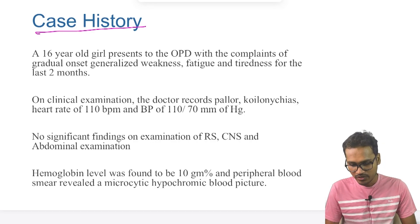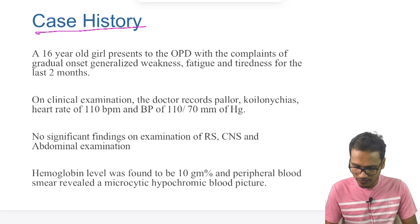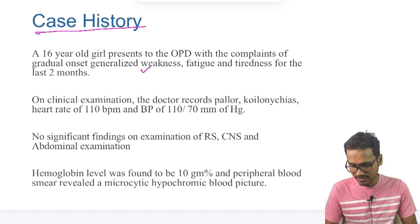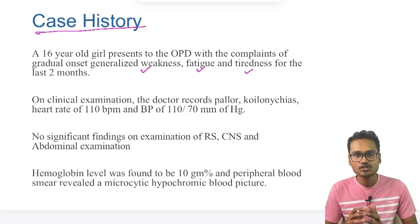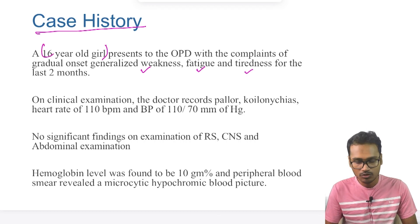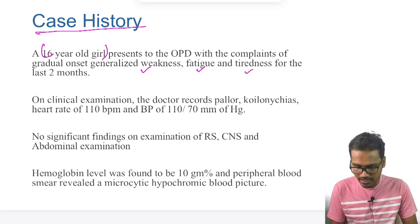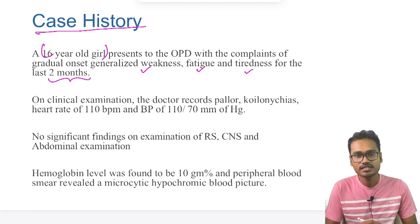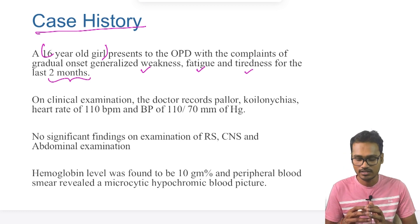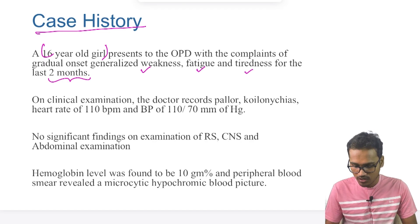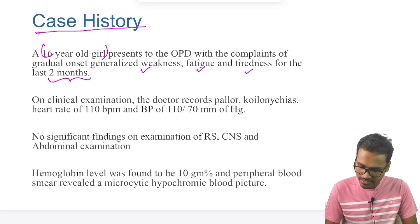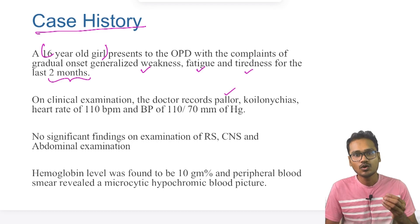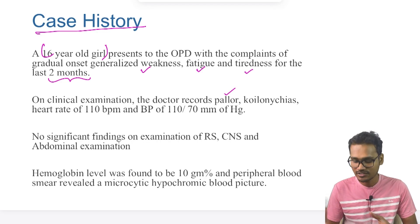A 16-year-old girl presents to the OPD with complaints of generalized weakness, fatigue, and tiredness for the last two months. We have to note that the age is 16 years old, so it could be the first event that is happening, and it is just for the last two months — she does not have any kind of long history.